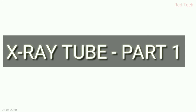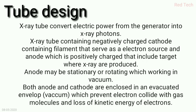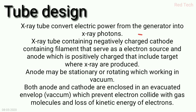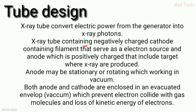In this section we have a quick review of the x-ray tube — basically what is inside it. In terms of tube design, the x-ray tube converts electric power from the generator into x-ray photons. The electricity comes from the generator and is converted into x-ray photons.